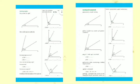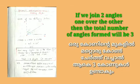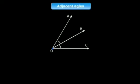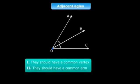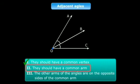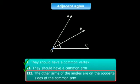If you join two angles one over the other, they share a common side. The common name is OB. It is a common side, the same as adjacent angles.